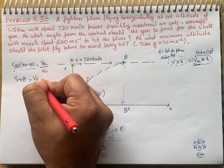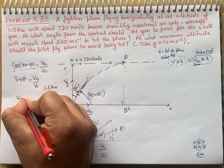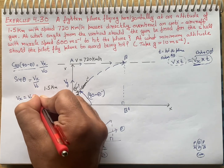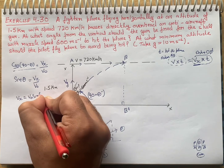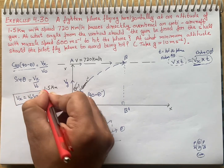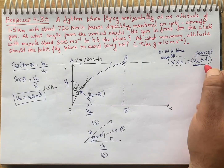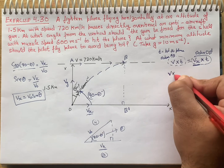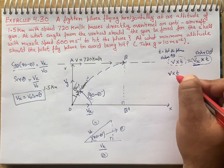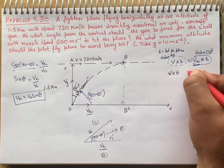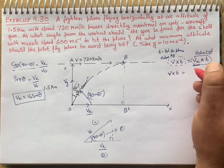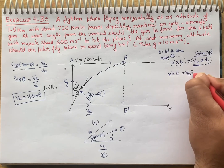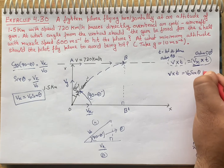So sin theta = vx upon V0. We needed to find the value of vx, which is the velocity component in x direction. So vx = V0 sin theta. We put this condition in: velocity of plane into time gives distance AB, which equals vx component V0 sin theta into t.